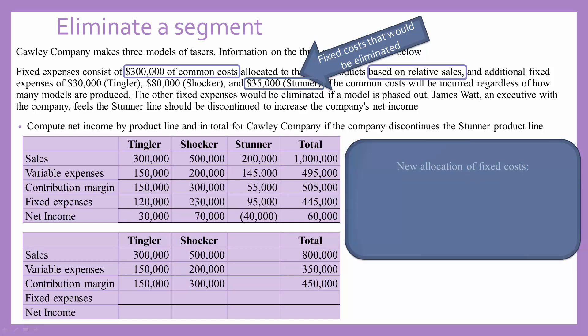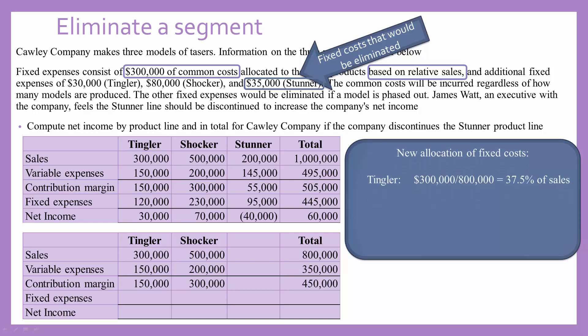The first thing we need to do is figure out our percentage of sales for our Tingler line. Total sales after we eliminate Stunner are $800,000. Our percentage of Tingler sales of $300,000 comes out to 37.5% of sales. We can then allocate our common fixed costs of $300,000 times 0.375 to figure out that Tingler's portion of those fixed costs would be $112,500.